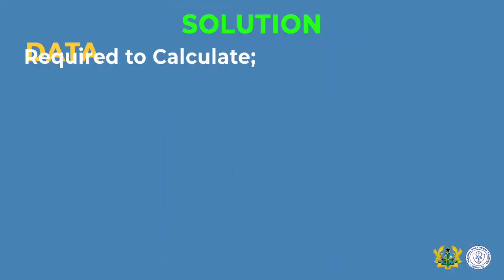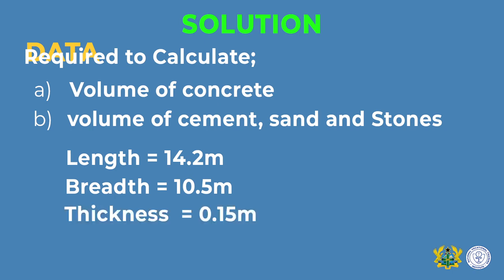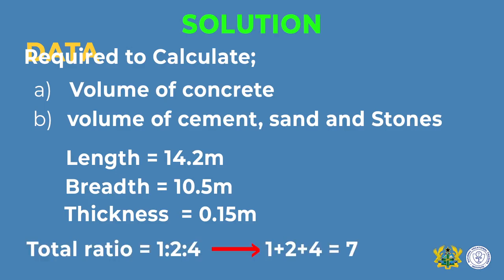Before you tackle any question, you must first come up with the data. Required: (1) calculate volume of concrete, (B) volume of cement, sand, and stone. The drawing gives length, breadth, and thickness measurements. The total ratio is 1 + 2 + 4 = 7, which means our total ratio for this particular question is 7.